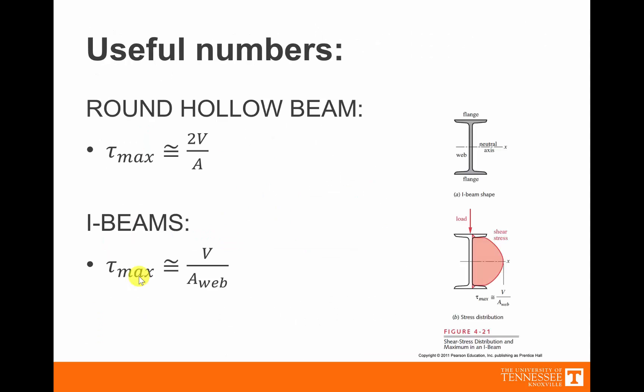A couple other useful approximations: the maximum shear stress for hollow beams is roughly equal to 2V/A. For I-beams, it's roughly equal to V divided by the area of the web. The web area is the area of the inside section — take the small width multiplied by the height of the web — not the full outside section.